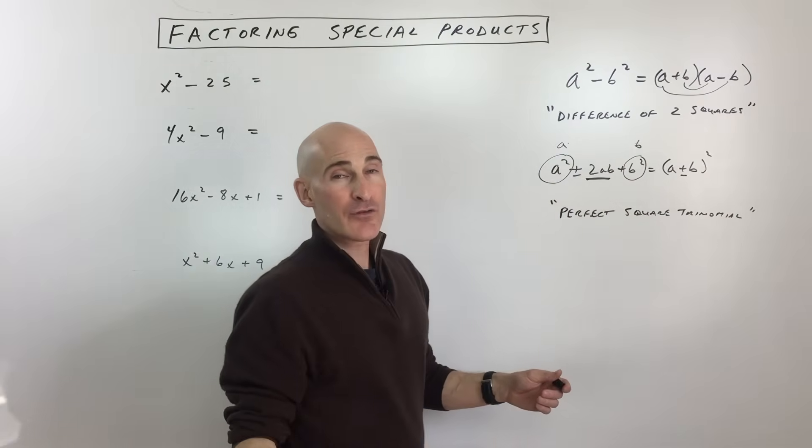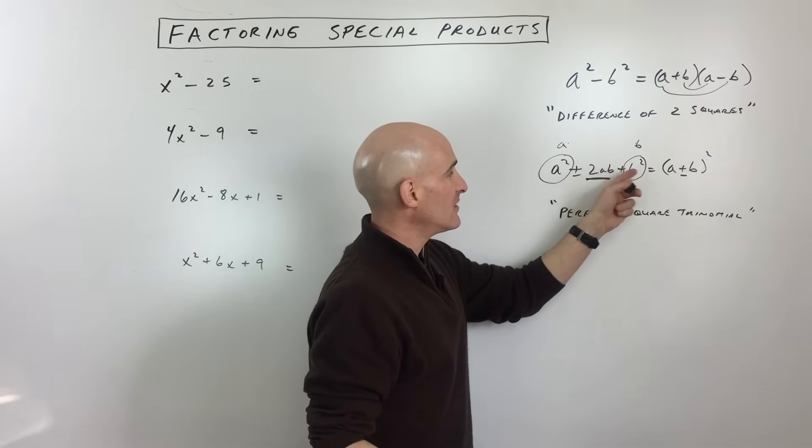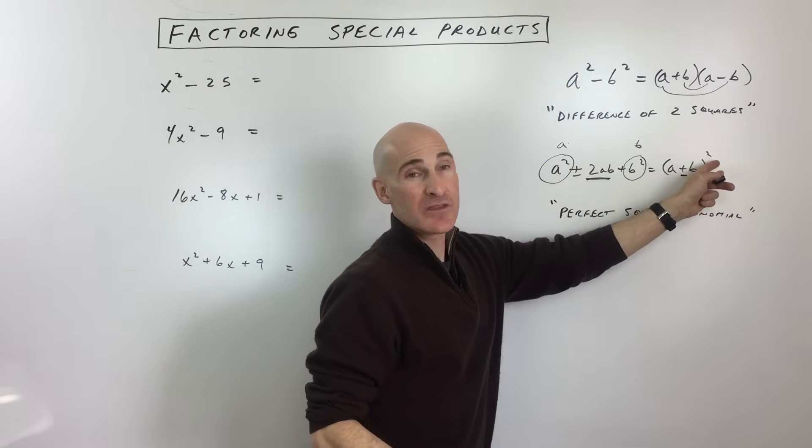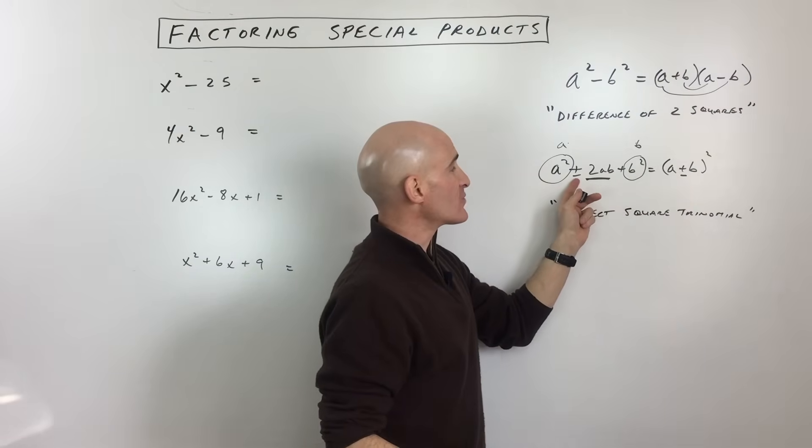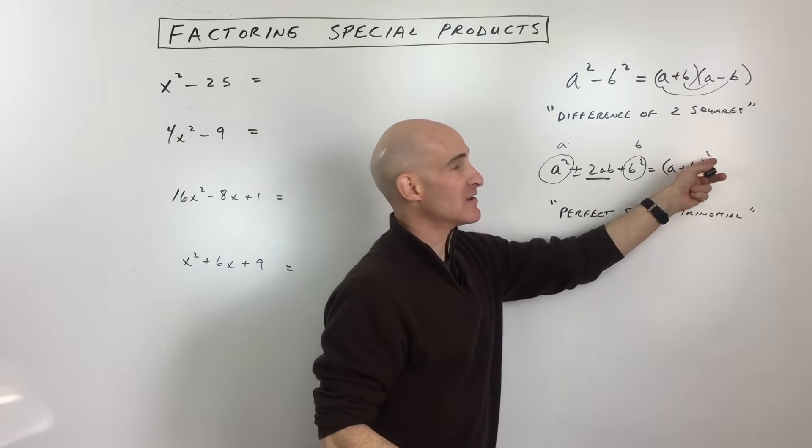The other thing to pay attention to is that if the middle term is positive, then this is going to be (a + b)², whereas if you're subtracting, it's going to be (a - b)².